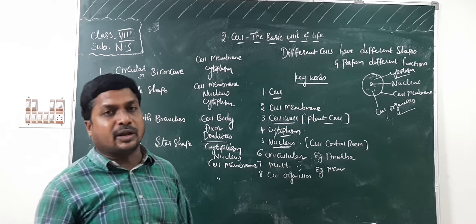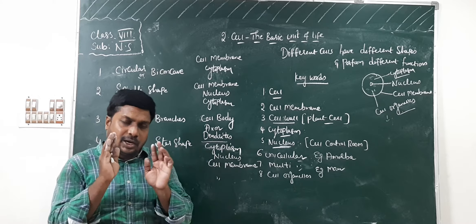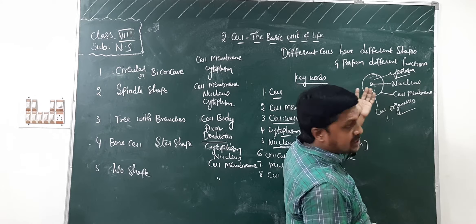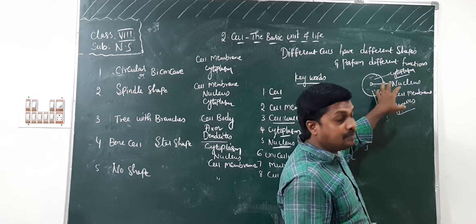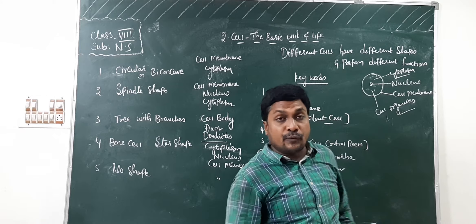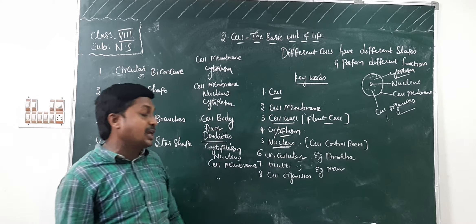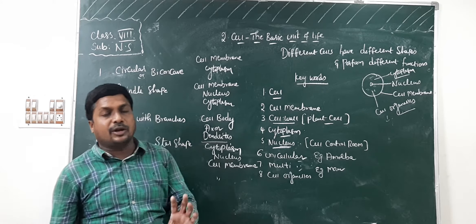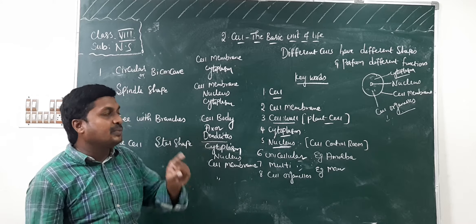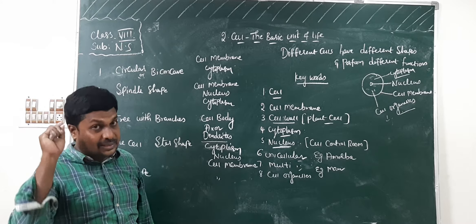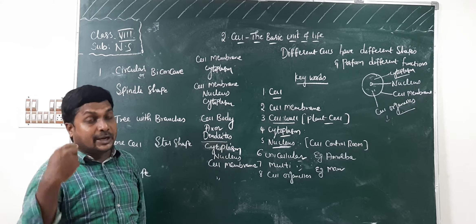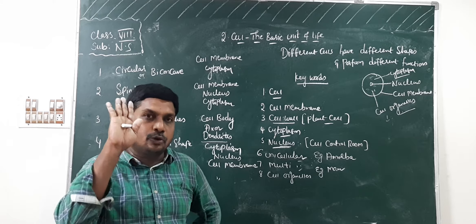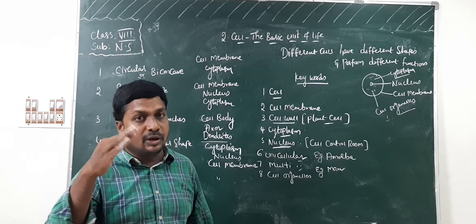Regarding cell organelles: a cell consists of a nucleus and other cell organelles in the cytoplasm, covered by a cell membrane. In 8th class, you need to know that a cell has a membrane, and some cells have a nucleus and cytoplasm — a jelly-like substance — where you can find cell organelles. No need to learn further detail until 9th class.